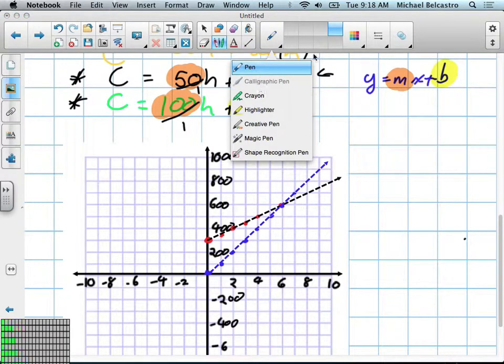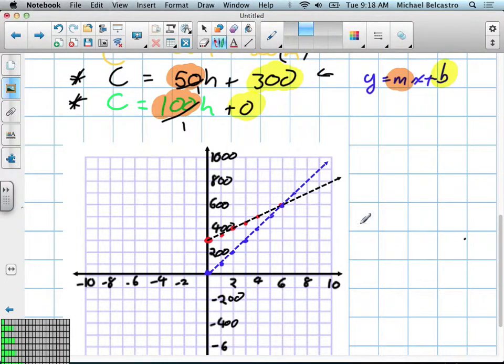What looks like our point of intersection in this question? On 6, 600. So at 6 hours, how much will it cost him? 600. So let's make more information out of this. This is our hours and this was our cost.